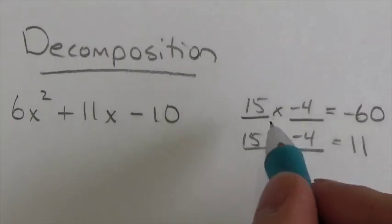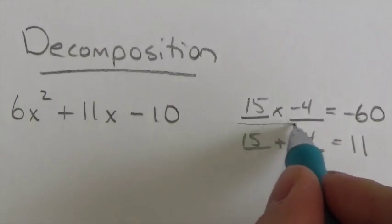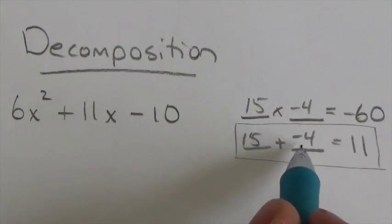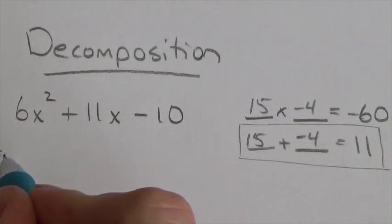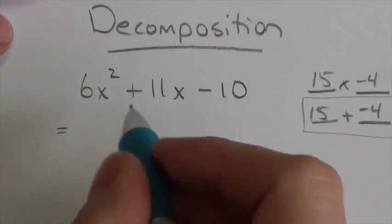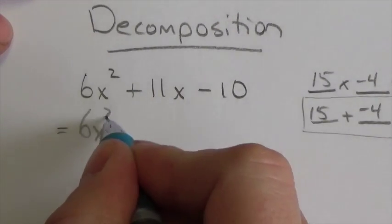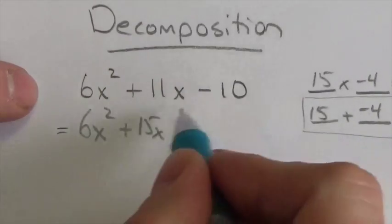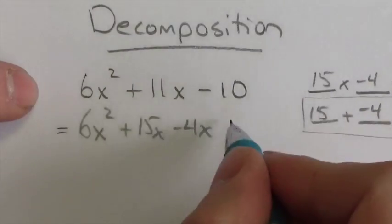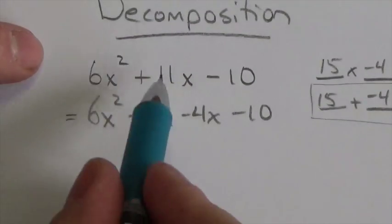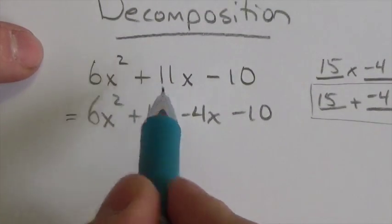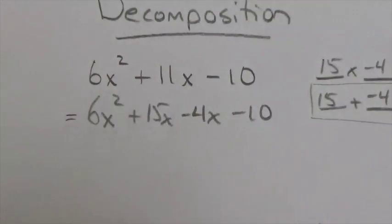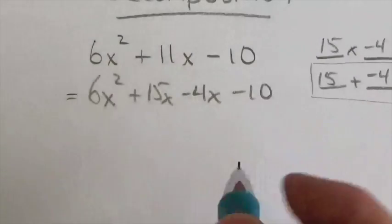That's the hard part of factoring, especially by decomposition. It's coming up with these numbers here. Now, this is the part that I'm interested in because notice that 15 and negative 4 get me 11. So what I'm going to do is I'm going to rewrite my expression here now and I'm going to rewrite the 11 as 15x and negative 4x minus 10. So all I've done is replaced the 11 with these two numbers that I've already determined will give me a sum of 11. Now I've got four terms.